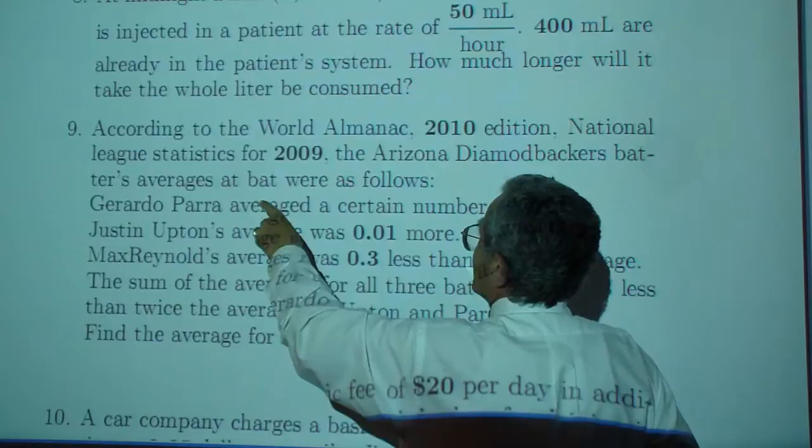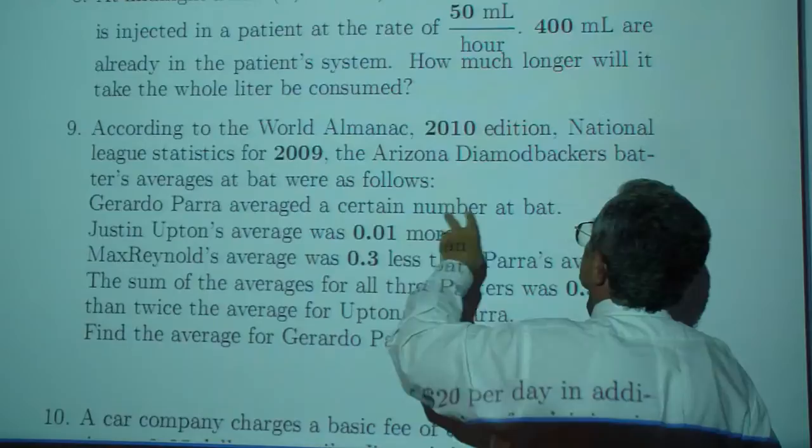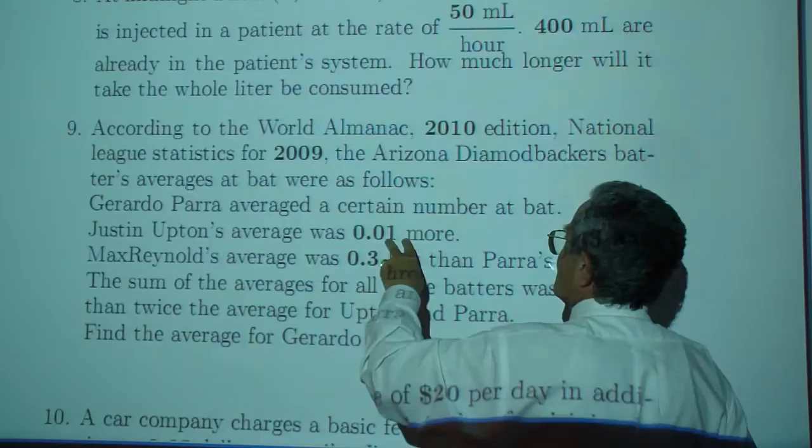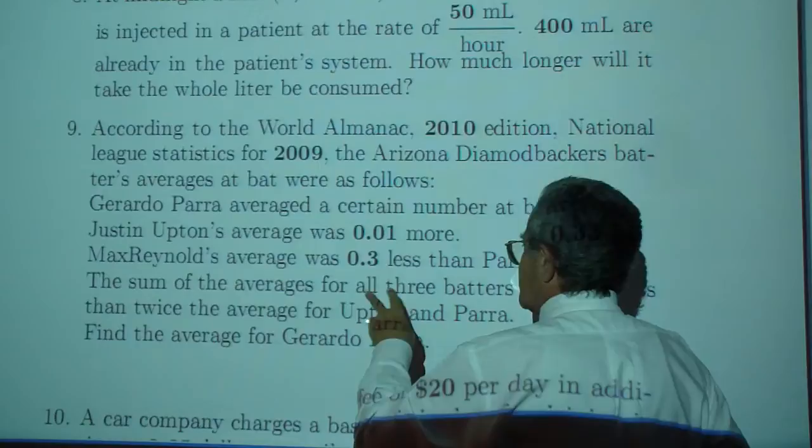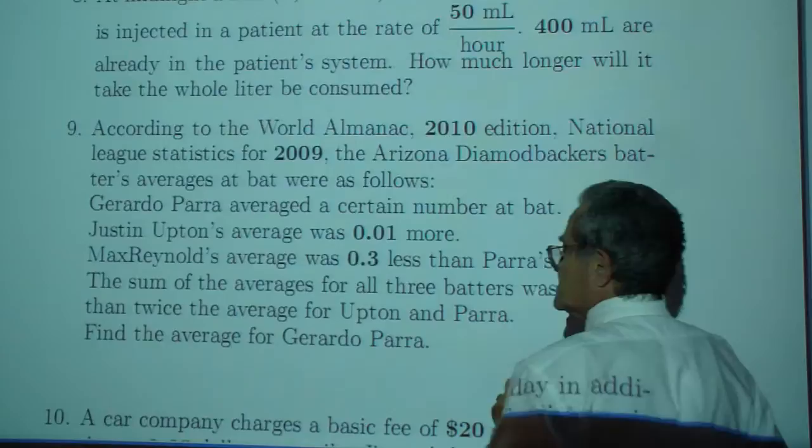...the Arizona Diamondbackers' batter's averages at bat were as follows. Gerardo Parra averaged a certain number at bat. Justin Upton's average was 0.01 more. Max Reynolds' average was 0.3 less than Parra's average. The sum of the averages for all three batters was 0.33...